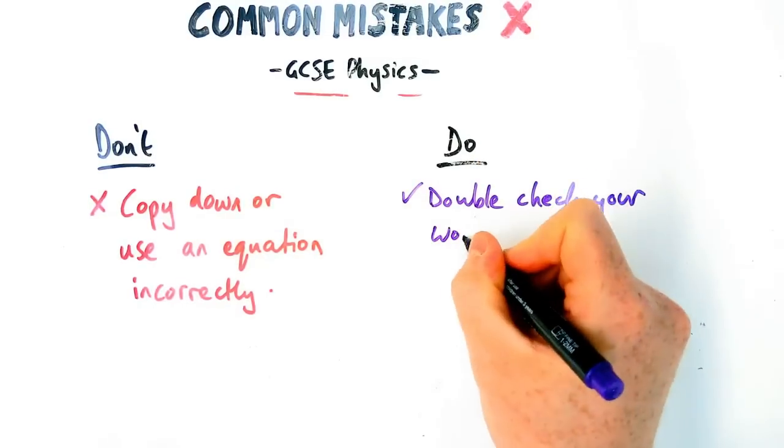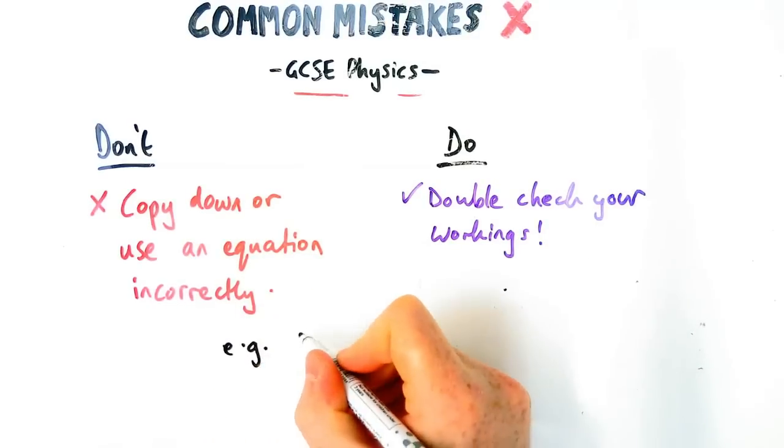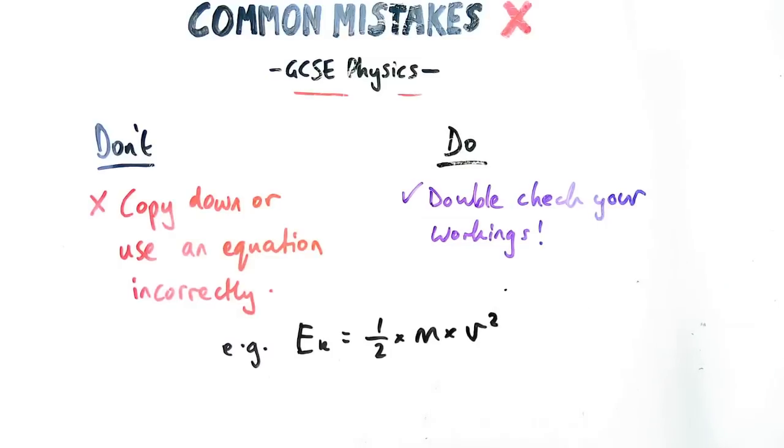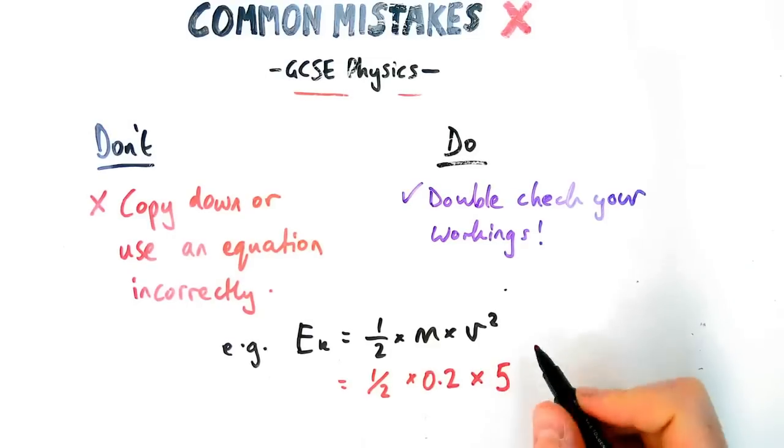for putting in your answer an equation and you missed out a squared or you missed out a half or something like that. Happens more often than you think, especially when you're rushing, you've got a long exam. So let's say this example here, you've got kinetic energy equation, half mv squared. If in your answer, you just forget to square the speed, you won't get marks for it.